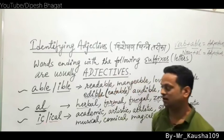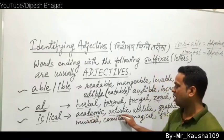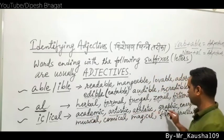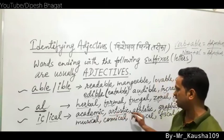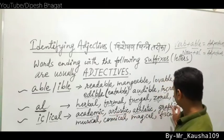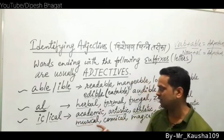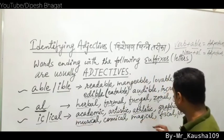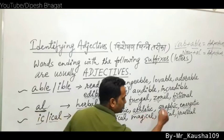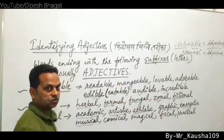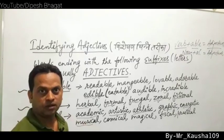Suffixes -ic or -ical: academic, artistic, athletic, prolific, graphic, energetic (ending in -ic); musical, comical, magical, fiscal, practical (ending in -ical) — all these are adjectives.